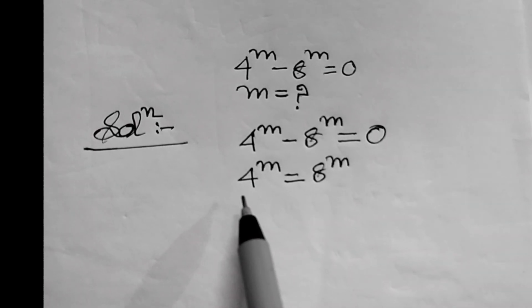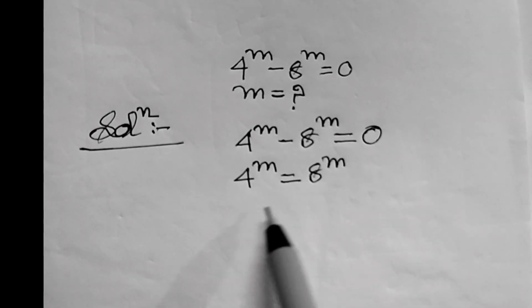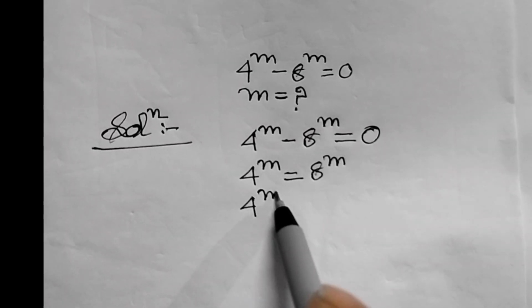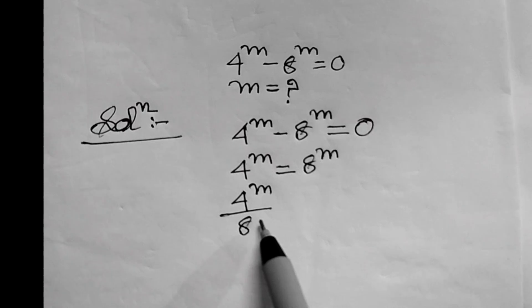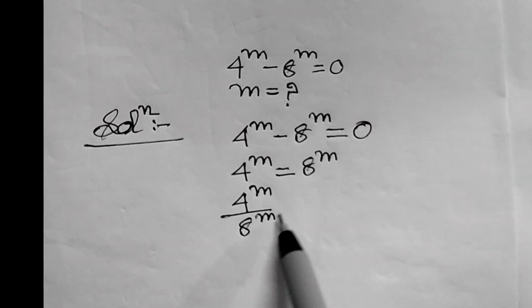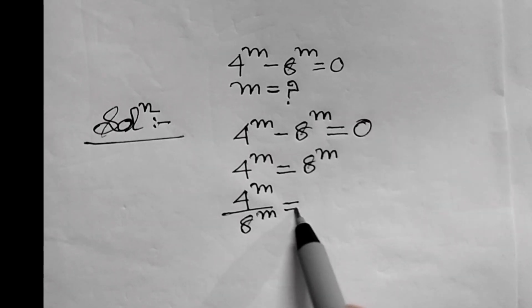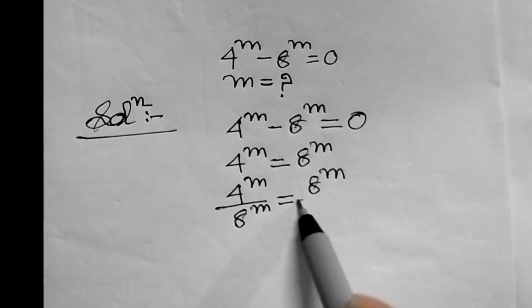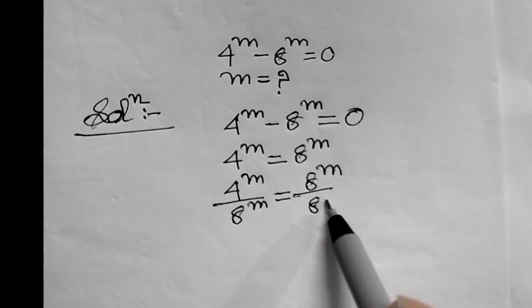Now, we will divide both sides by 8 power m. Therefore, 4 power m upon 8 power m equals 8 power m upon 8 power m.